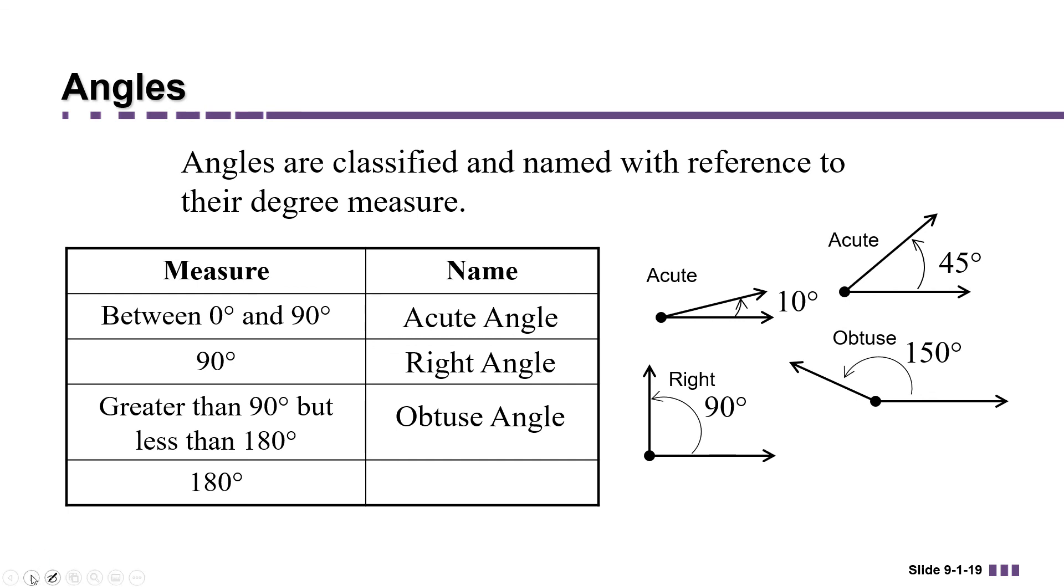And then finally, for an angle of 180 degrees, we actually call it a straight angle because it forms a straight line.